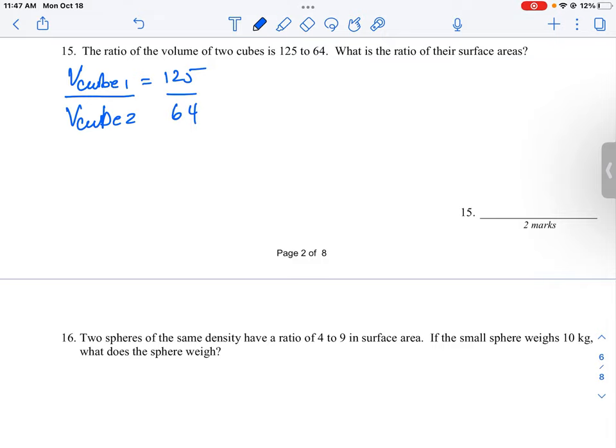So we've got the large cube to the small cube, and we want to go back and figure out what is the ratio of their surface areas. So in order to do this we need to take volume back down to its single linear measurement, like the length of the side of the cube.